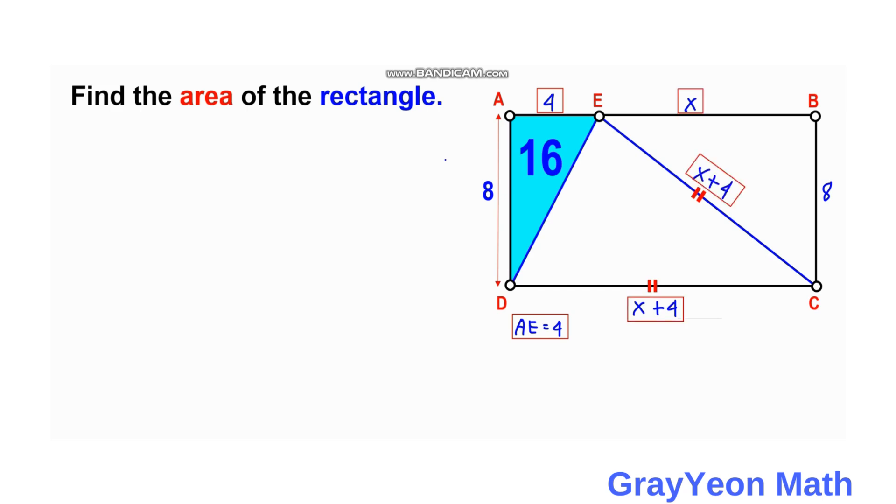Next, we use the Pythagorean theorem on this triangle. The hypotenuse is X plus 4, and the legs are X and 8 units. We start with the hypotenuse squared, so X plus 4 squared...